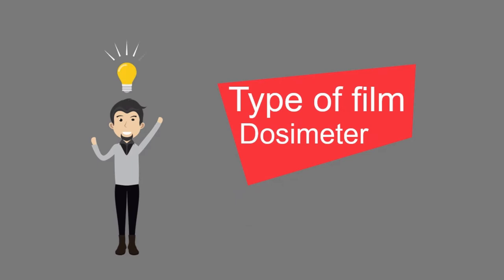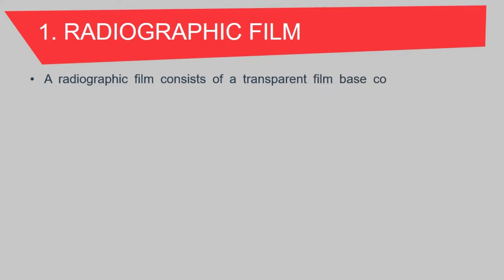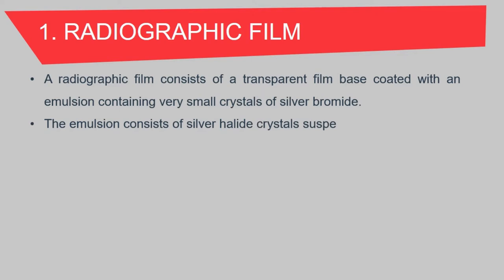Next is the type of film dosimeter. First is the radiographic film. A radiographic film consists of a transparent film base made out of cellulose acetate or polyester resin, coated with an emulsion containing very small crystals of silver bromide.